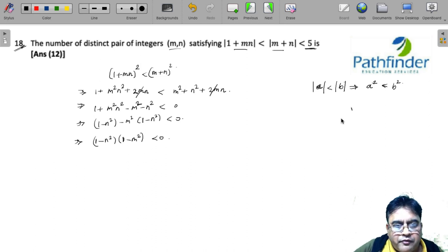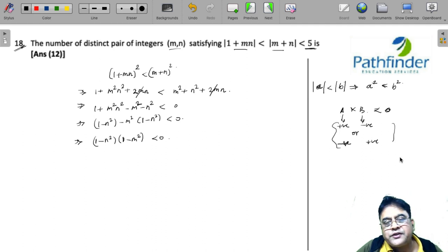If the product of two numbers a and b is less than 0, then one of them has to be positive and the other must be negative. Either a is positive and b is negative, or a is negative and b is positive.